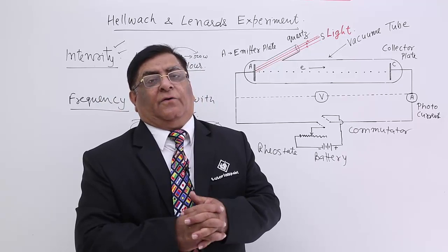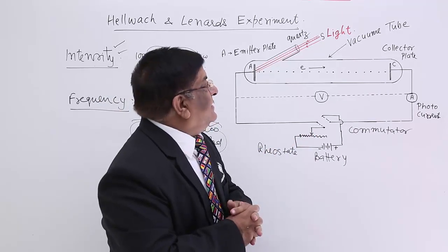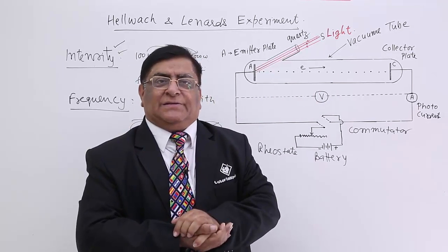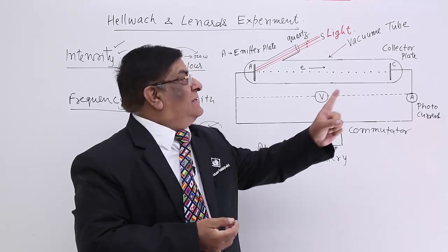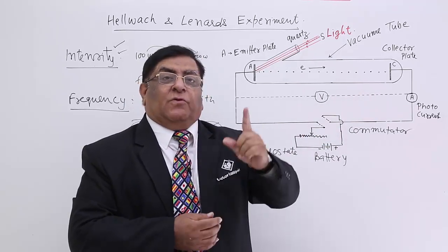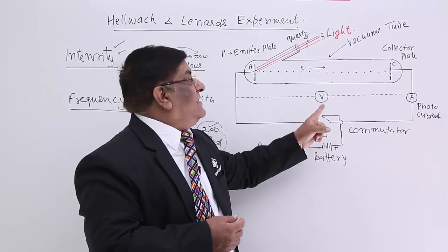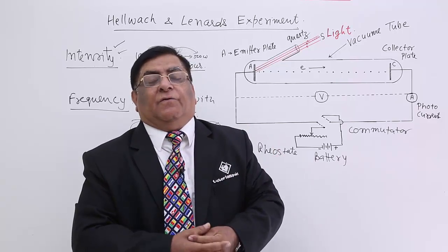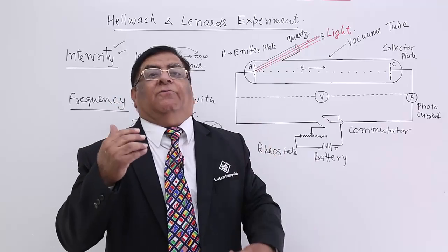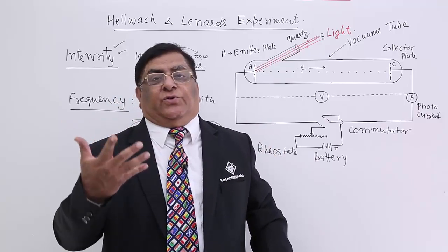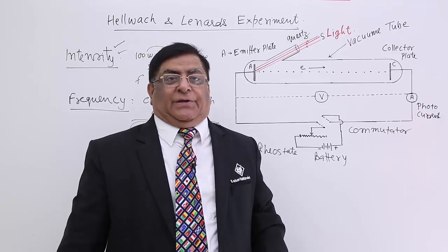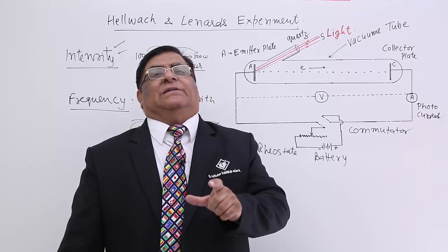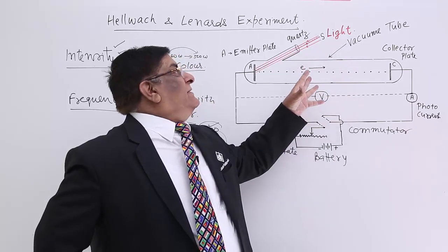Now we start with the experiments. We will keep on changing intensity and see the current and voltage. We will keep on changing frequency of light and see the current and voltage. And then we will argue and conclude, and that will be a new theory — the photoelectric theory. From the next lecture, we will do them one by one and see what are the relations of the different quantities here.